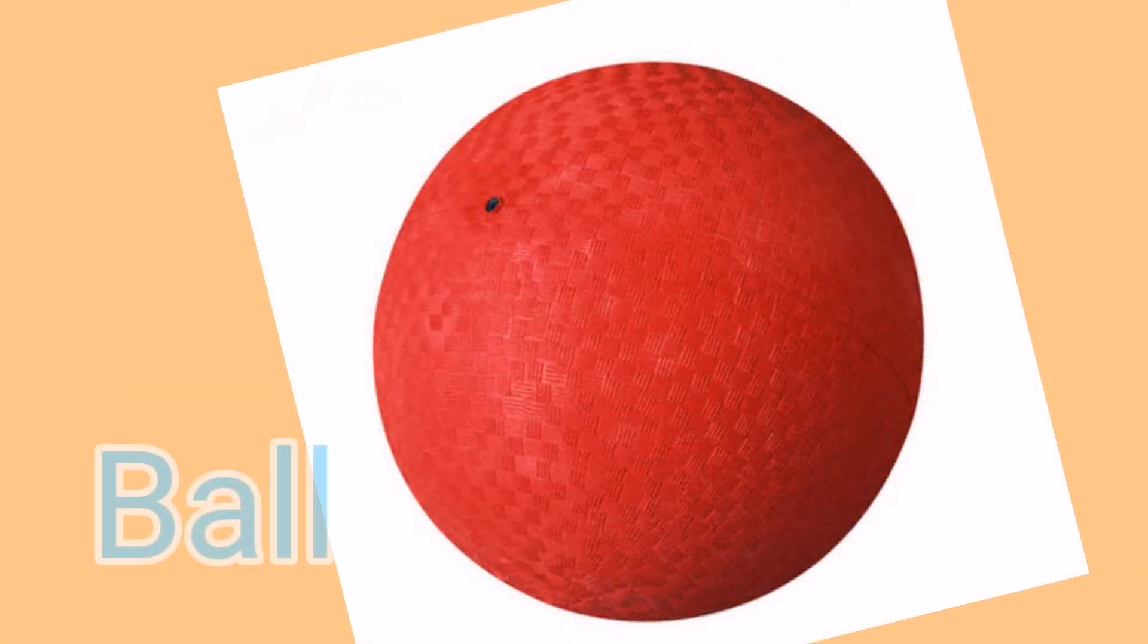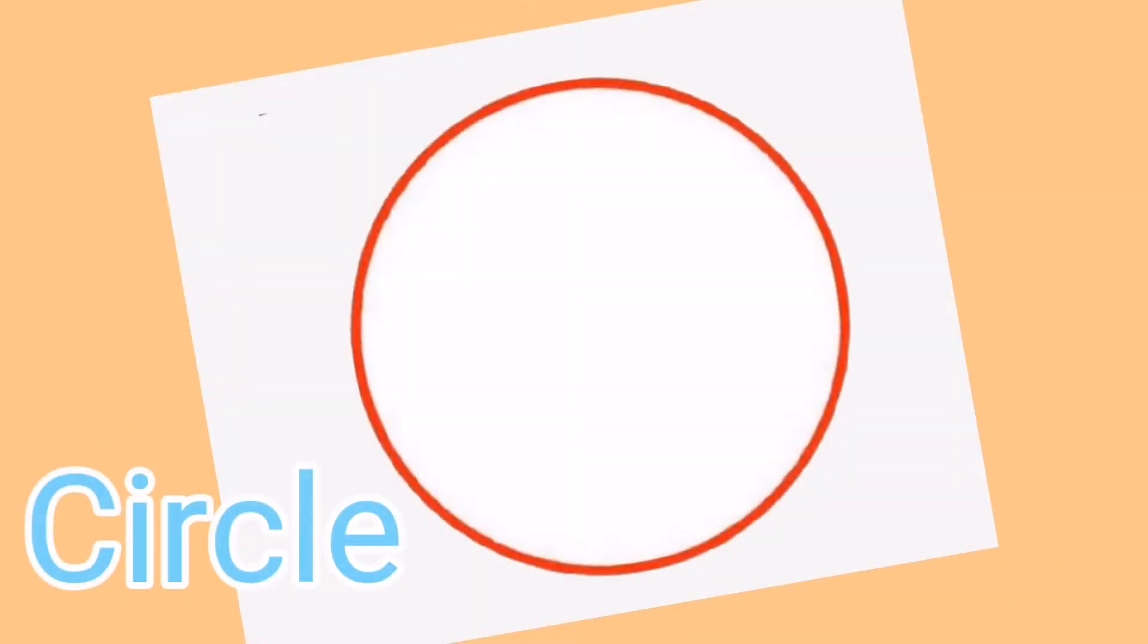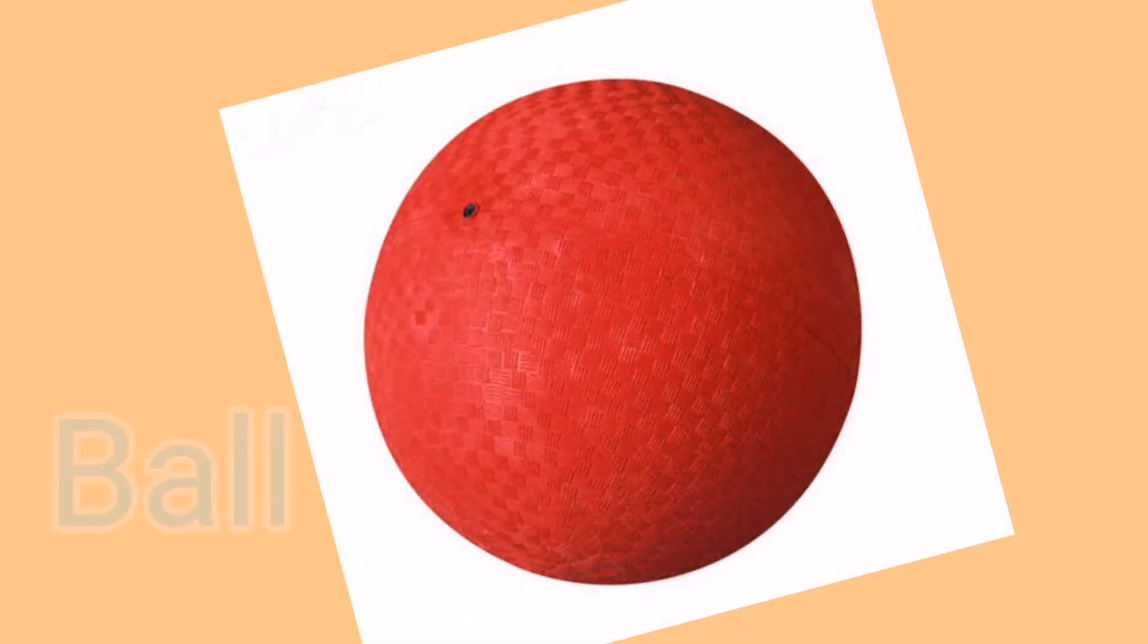This is a ball. One ball. The ball shape is circle, like this. This is a circle. A ball looks like a circle, isn't it?